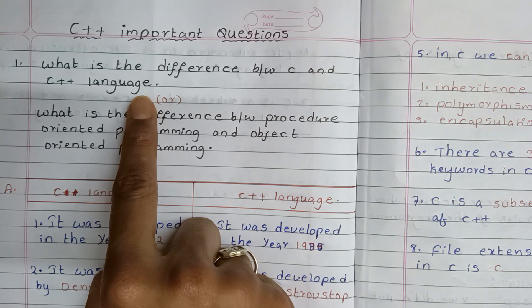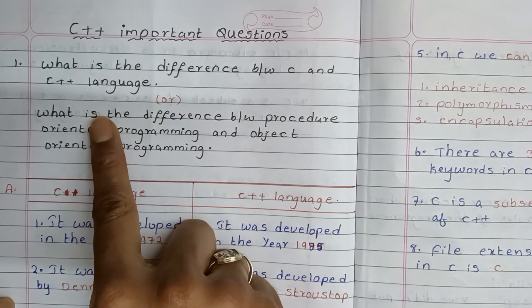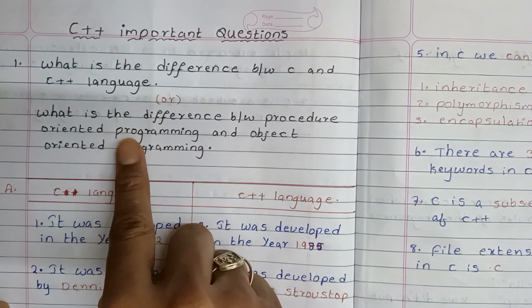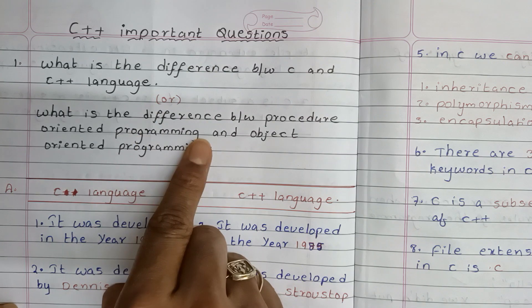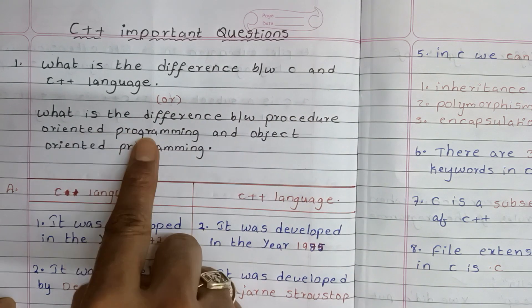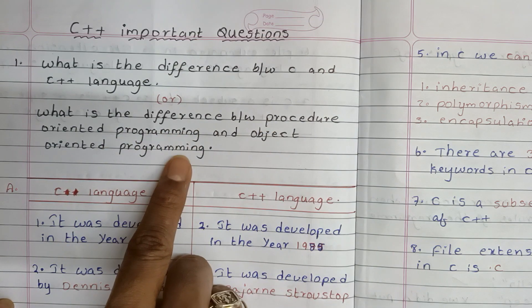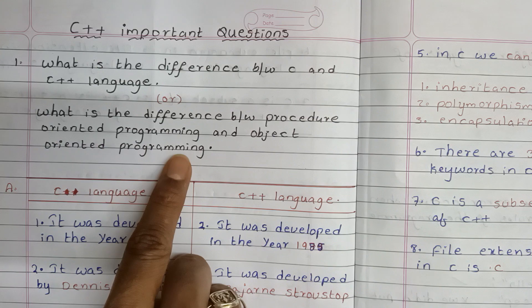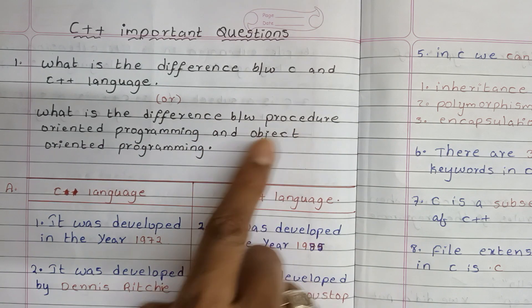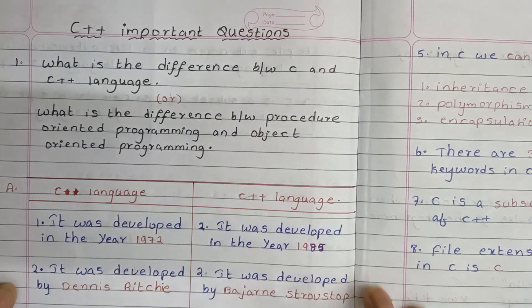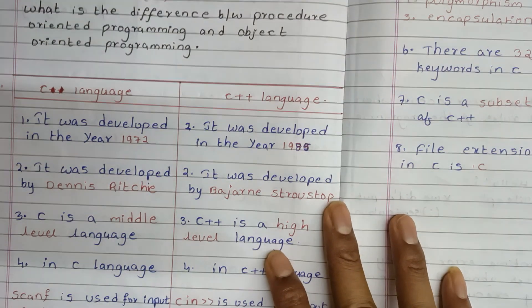This is a very important question that will be asked in the exam. It can also be asked as: what is the difference between procedure-oriented programming language and object-oriented programming language? Procedure-oriented programming means C language, and object-oriented programming means C++ language. C is a procedure-oriented programming language but C++ is an object-oriented programming language. Let us see the differences between C and C++.